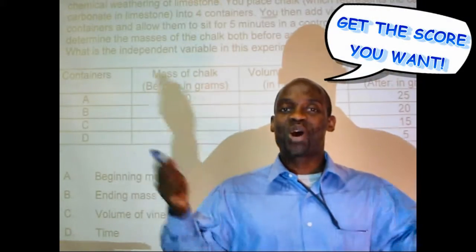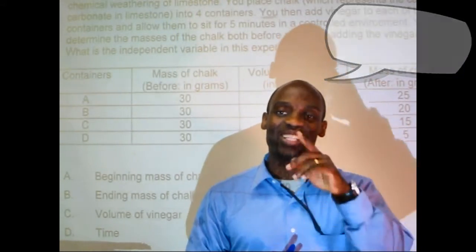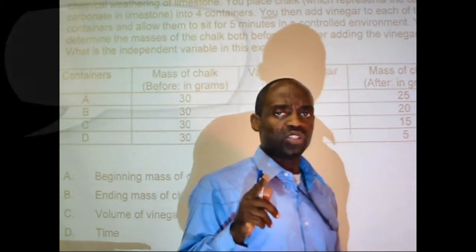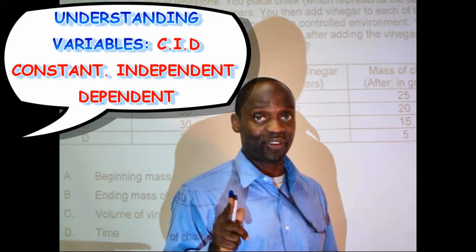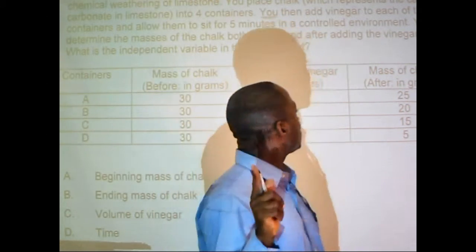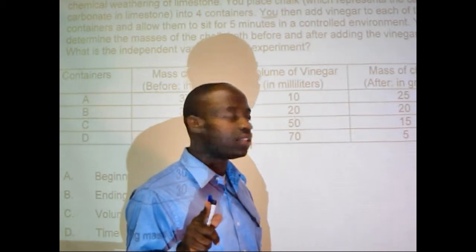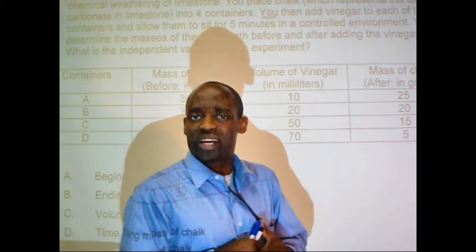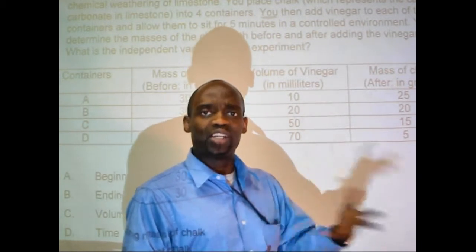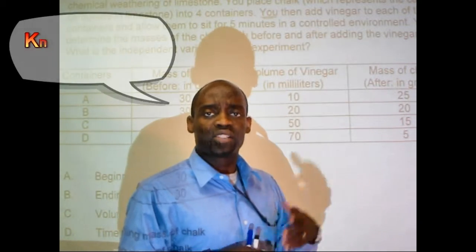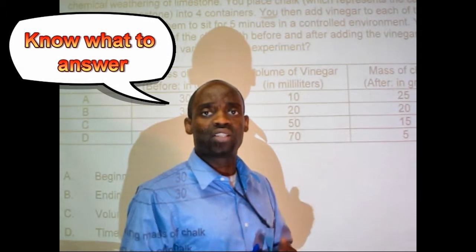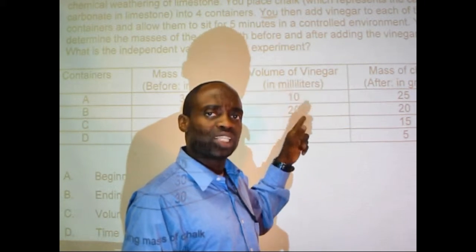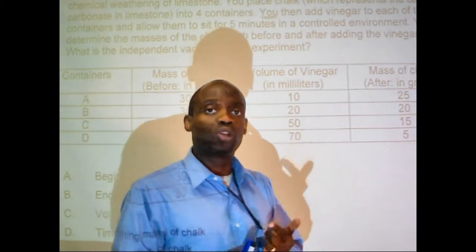Hey, this is Andrew Guy, and today we're talking about science again — making science a little bit more practical. This week we're working on test-taking skills, and it means the difference between getting an A or an F. Our topic today is going to focus on CID — we're talking about variables. Variables are everywhere, and in science they are extremely important. We're going to use a particular question to analyze and take apart so you can understand how to recognize what to look for.